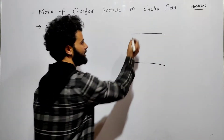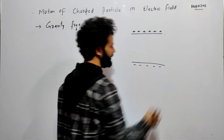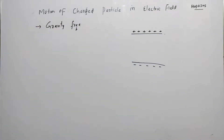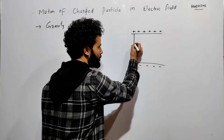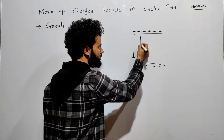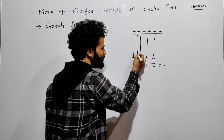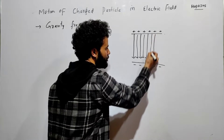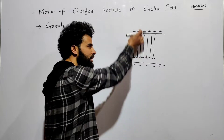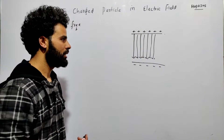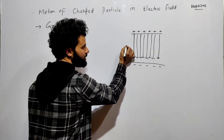Here we have two plates — one is a positive plate and another is a negative plate. This setup makes things easy. The positive plate creates an electric field going downward, and the negative plate also creates an electric field. We know that the electric field due to a positive charge goes away from it, and the field due to a negative charge comes towards it. So the net electric field between the two plates goes downward.